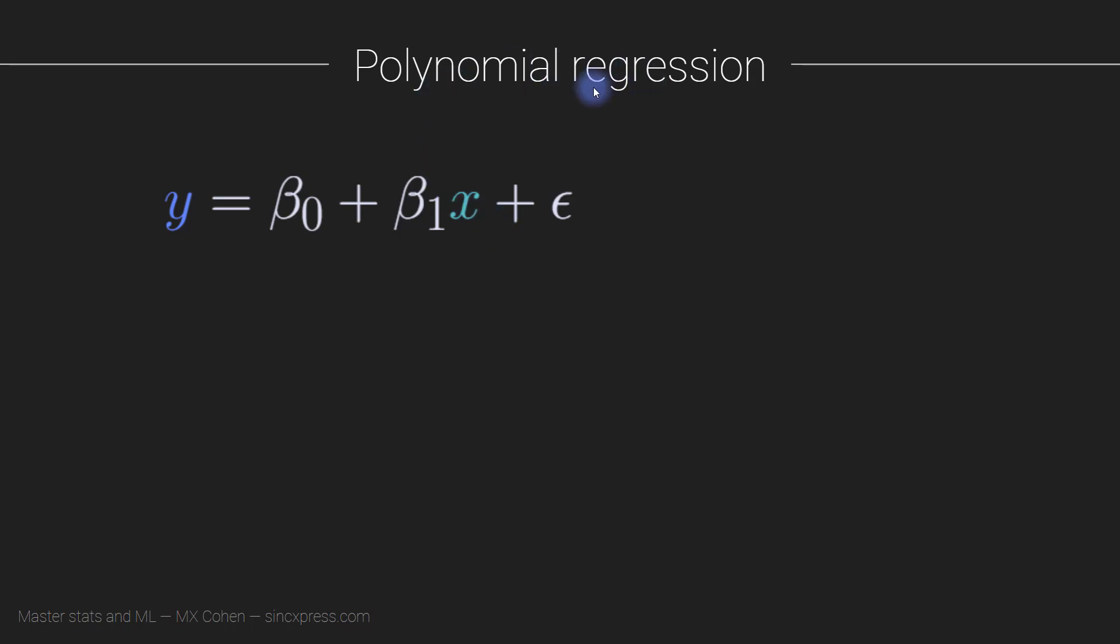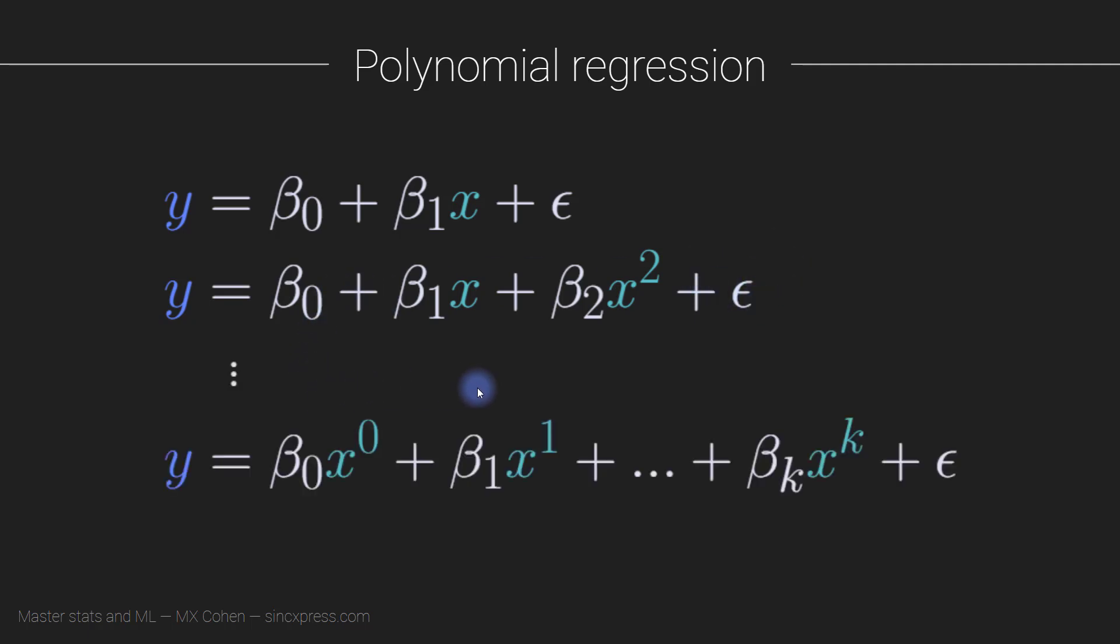But with polynomial regressions, we can add more terms here. So we can have something like this: y equals beta0, the intercept, plus beta1 times x plus beta2 times x squared, plus the residual term, and on and on. So we can get this to be higher in order, up to betak times x to the power of k. This would be a kth order polynomial regression.